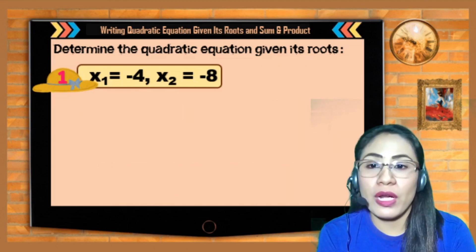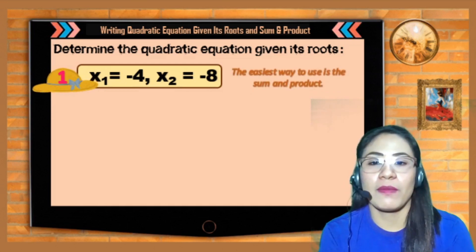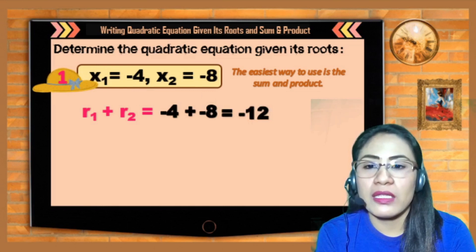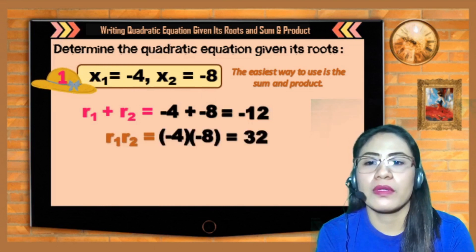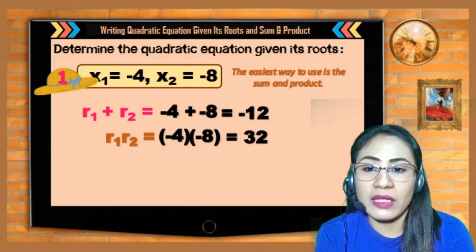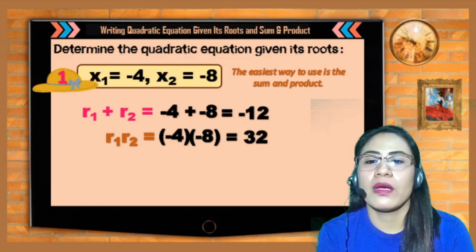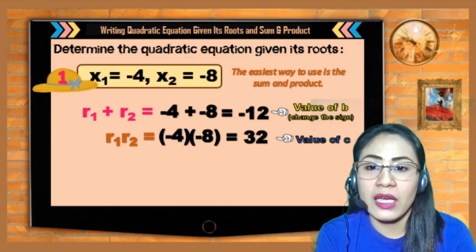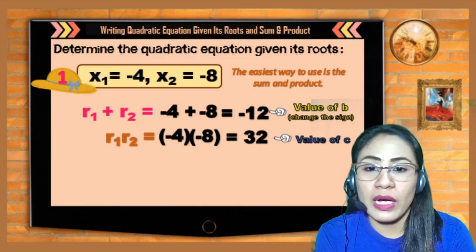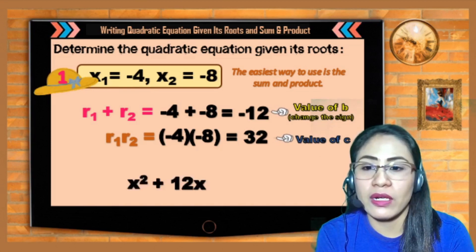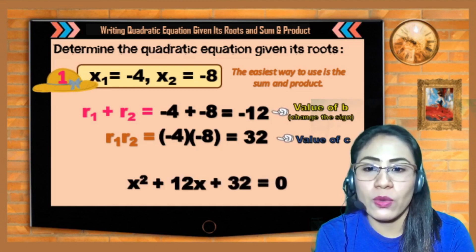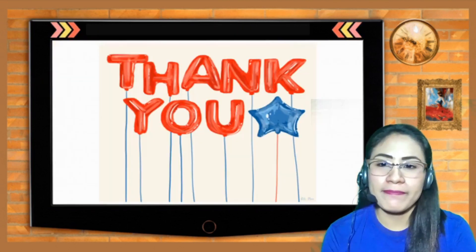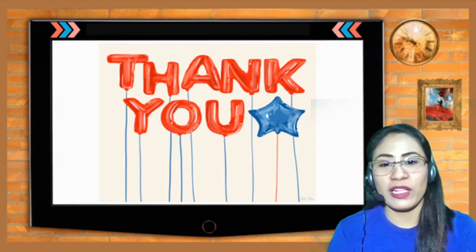Another example with roots −4 and −8. Sum = −4 + (−8) = −12; product = (−4) × (−8) = 32. The equation becomes x² + 12x + 32 = 0. Thank you, and I hope you learned something from this lesson.